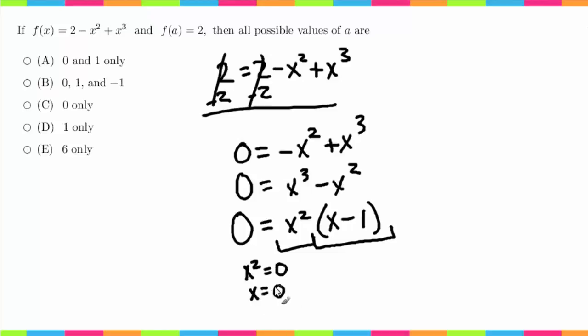Which is just x = 0. And then here we have x - 1 = 0, which is just x = 1. So that means we have two options: x = 0 or x = 1, and these are going to be our a values for which the function equals 2.